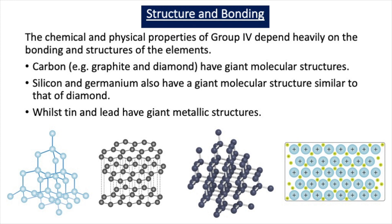Diamond has a giant covalent structure, and each carbon is at the centre of a tetrahedron. Graphite has a giant structure where the carbons are in layers of hexagons. Silicon has a very similar structure to diamond. Metallic bonding consists of positive ions surrounded by a sea of electrons, and the metallic bond is the attraction between the electrons and the positive ions. Metals have these giant metallic structures made up of metallic bonding.